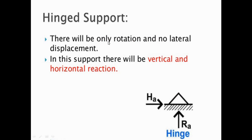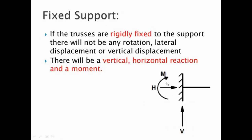The third type of support is hinge support. There will be only rotation and no lateral displacement. In this support there will be vertical and horizontal reactions — two unknown reactions: HA and RA for this hinge support.